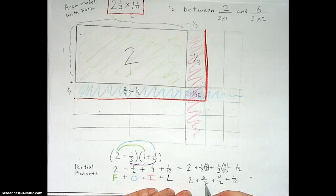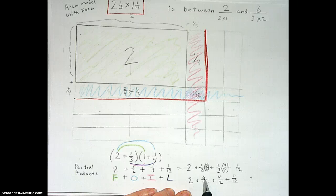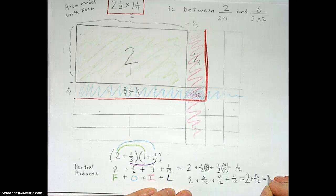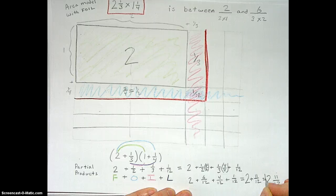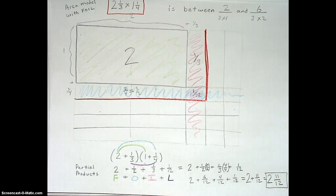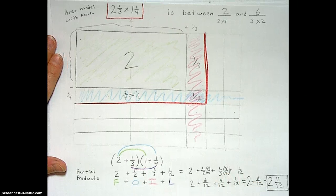So we've got 2 wholes, 6 twelfths, 4 twelfths, and 1 twelfth. So 6 and 4 is 10, one more is 11, so this gives us all together 2 and 11 twelfths. And that is our actual product for 2 and 1/3 times 1 and 1/4.